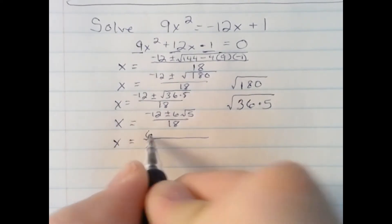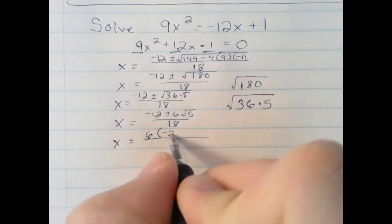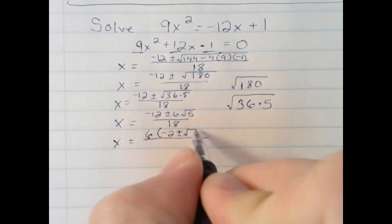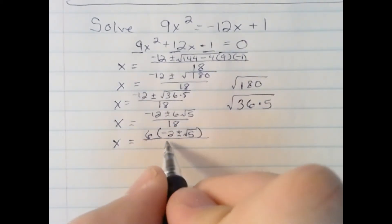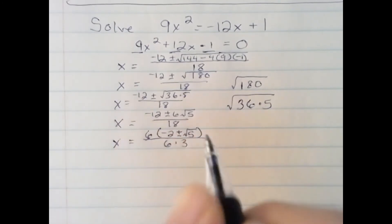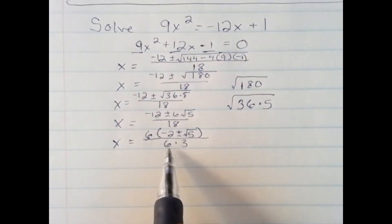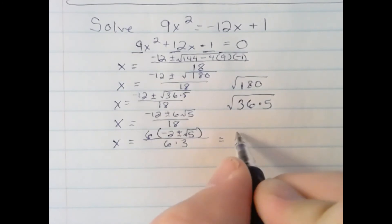Let's see what happens when I do that. I'm left with negative 2 plus or minus square root of 5. On the bottom, I have 6 times 3. The 6 on the top will cancel with the 6 on the bottom, leaving us a final answer of negative 2 plus or minus square root of 5 all over 3.